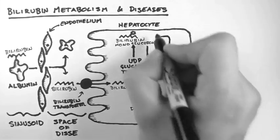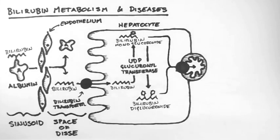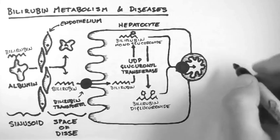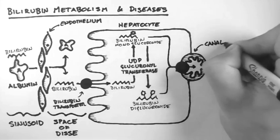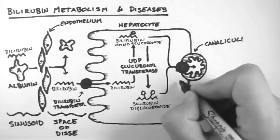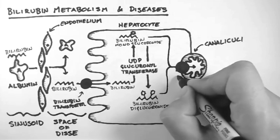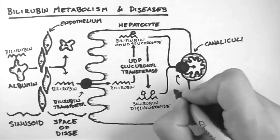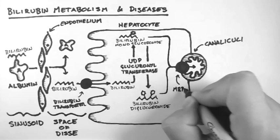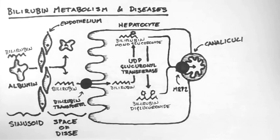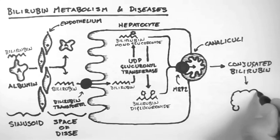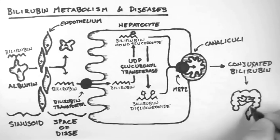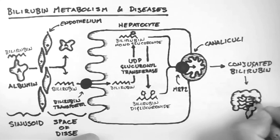Now the conjugated bilirubin can be excreted into the bile canaliculi. And this is done by a transporter called multidrug resistance associated protein 2, usually abbreviated MRP2. In this way the conjugated bilirubin is excreted into the gut and the bilirubin pathway continues.